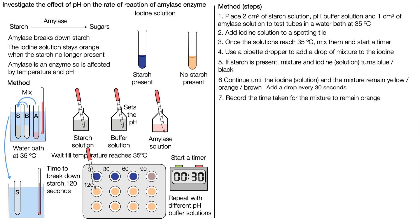We record the time taken for the mixture to remain orange and then we repeat at five different pHs, e.g. 3, 5, 7, 9, and 11. Those are examples.